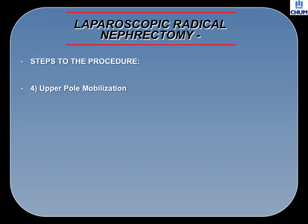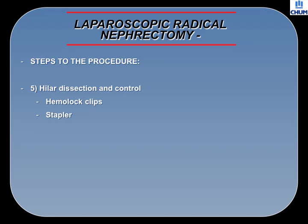Step 5: Renal hilum control, either through the use of hemolytic clips or the vascular stapler. In laparoscopic surgery, these can be completed with individual plastic clips or the use of titanium clips in a vascular load, so as to ensure complete hilum transection of all major blood flow. This is the most crucial aspect of this surgery.